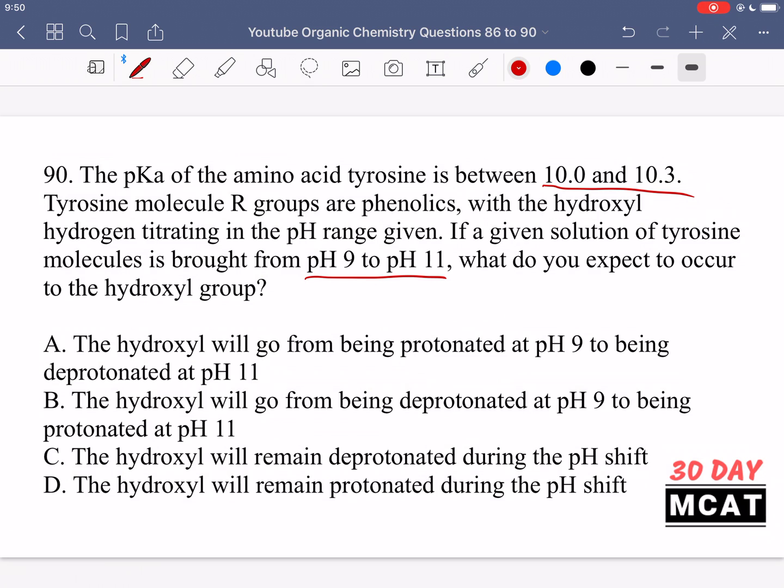So what happens if we go from 9 to 11? That means we had originally the protonated form and we went to the deprotonated. So option A is saying the hydroxyl will go from being protonated at pH 9 to being deprotonated at pH 11. Yes, this is correct.